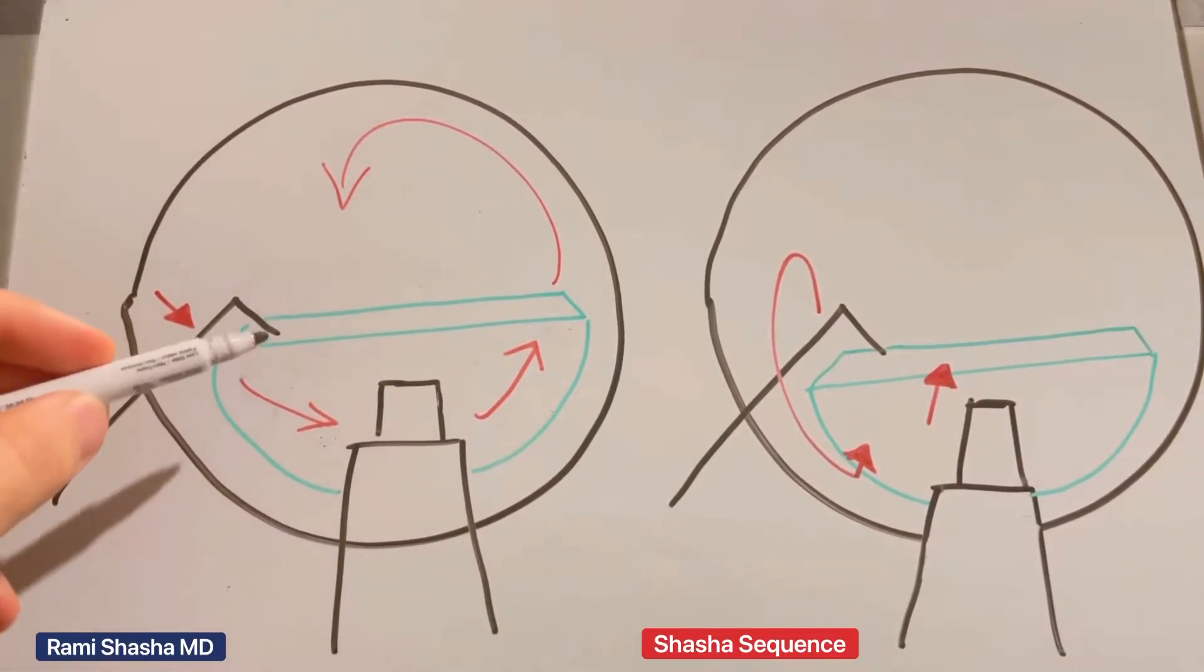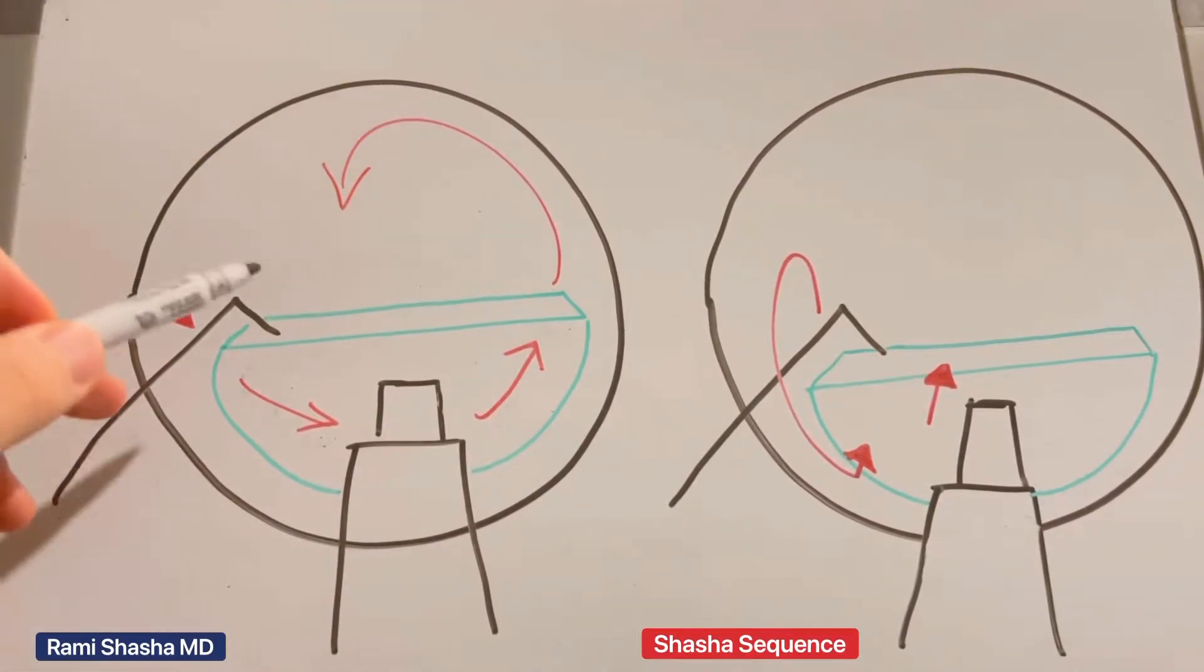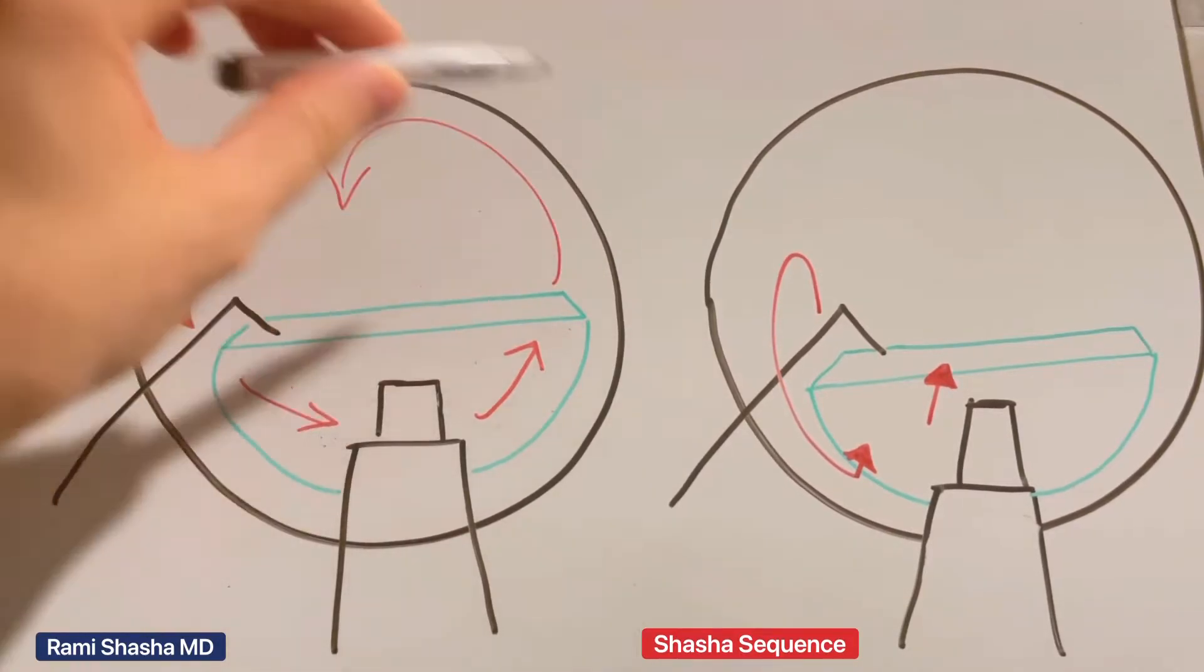This obviously takes more time. Sometimes you can't actually rotate the hemi-nucleus and you have to try the other way. So it can consume some time and sometimes stress the zonules as you're pushing across.